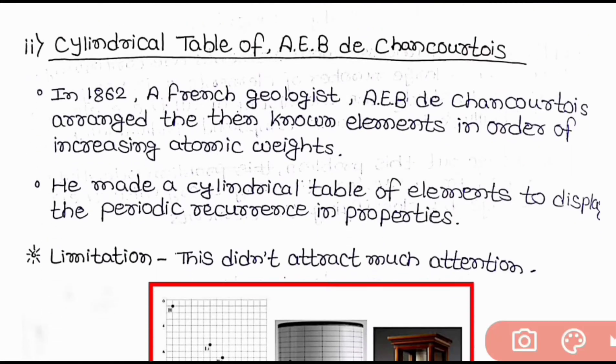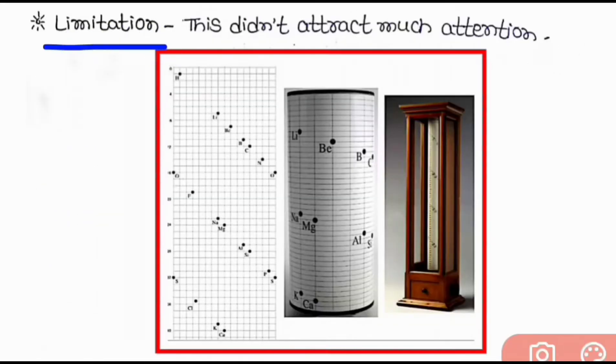Now, a cylindrical table of A.E.B. De Chancourtois. In 1862, a French geologist A.E.B. De Chancourtois arranged the then known elements in order of increasing atomic weight. He made a cylindrical table of elements to display the periodic recurrence in property. Now, the limitation of the cylindrical periodic table is that this did not attract much attention and the pictorial view of this cylindrical table is here which you can see more clearly in the PDF given in the description box.